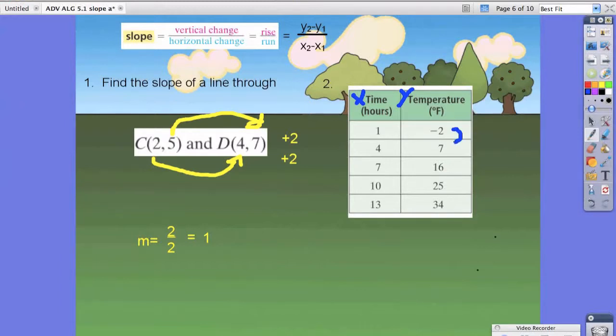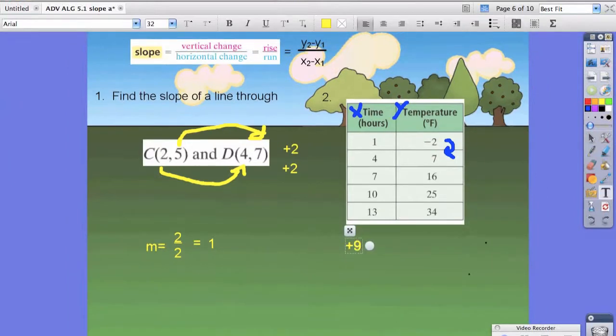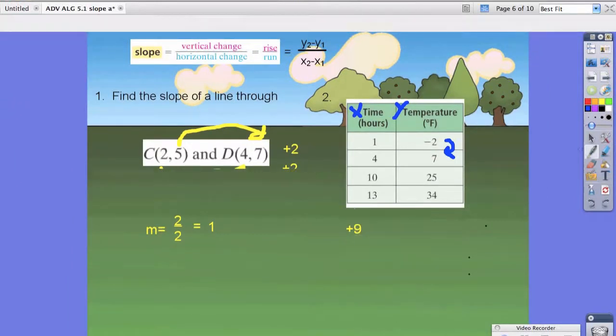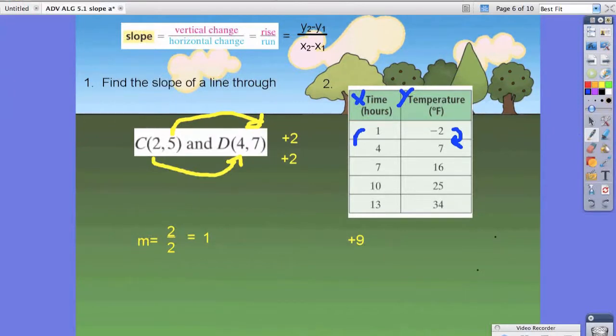So we're going to do a couple of them. So from negative 2 to 7, we had to add 9. And from 1 to 4, we had to add 3.